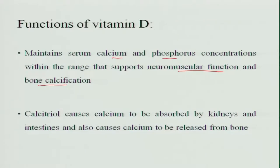Vitamin D is very important for the absorption of calcium. Therefore, it has a very important function in bone calcification. This active form is also called calcitriol, which causes calcium to be absorbed by the kidneys and intestines. Whenever the blood level of calcium is decreased, it causes calcium to be released from the bones to maintain the level of calcium in the blood.